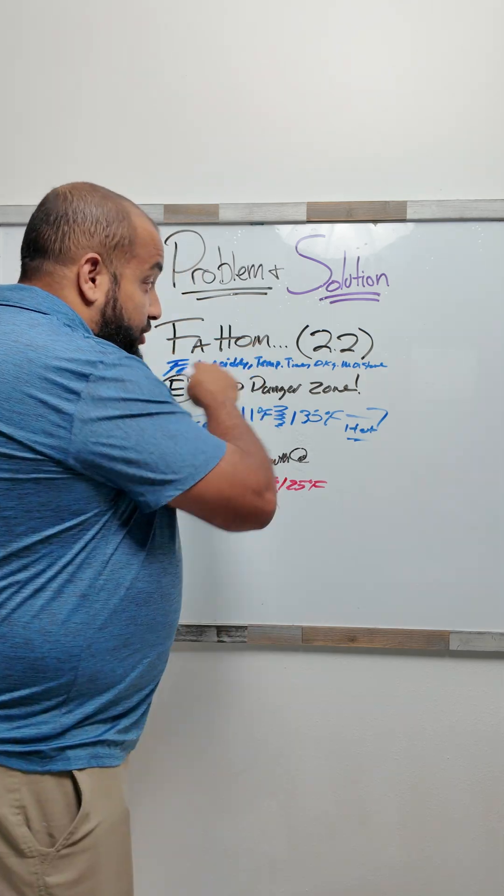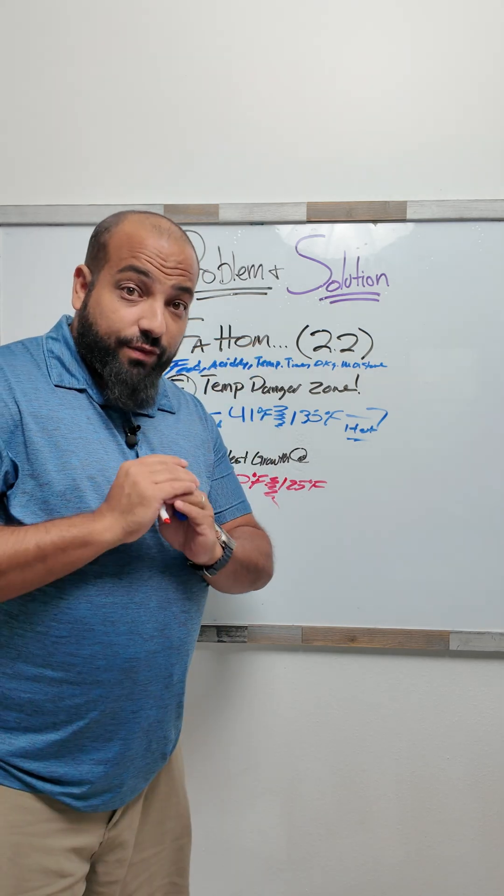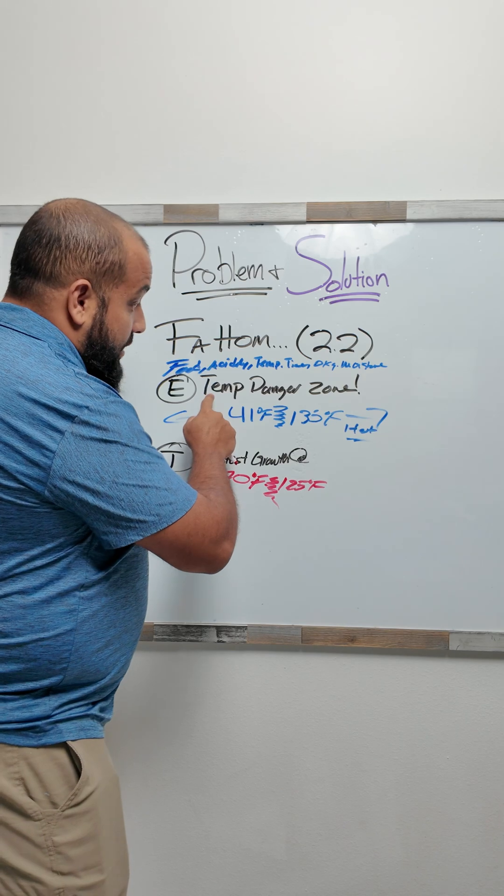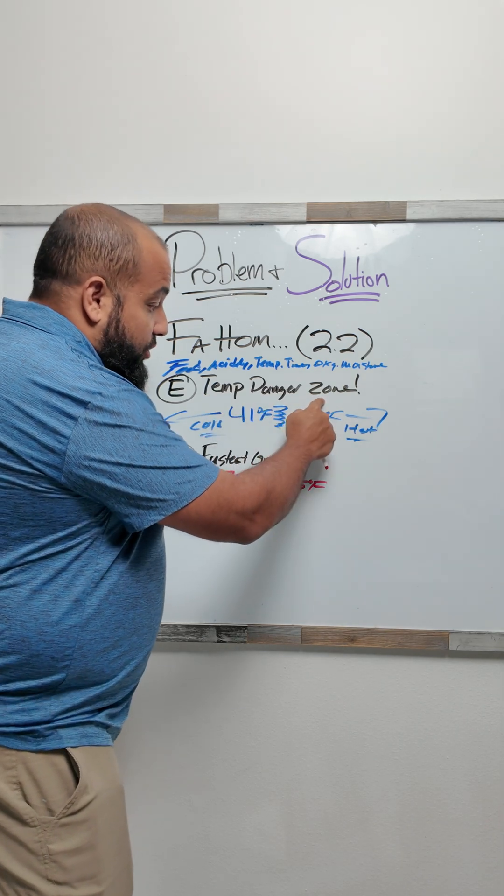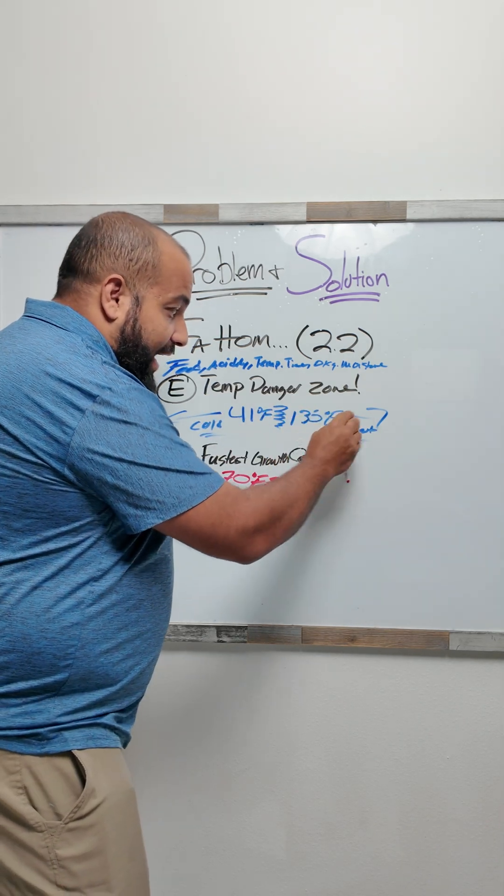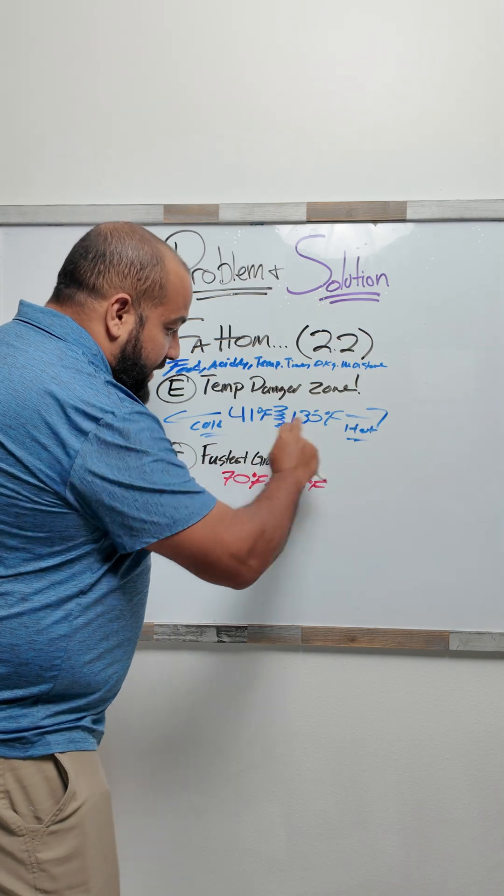A couple things. Understand Fat Tom. Understand the abbreviations. Second thing, temperature danger zone: 41 to 135. We keep hot food hot, cold food cold, nothing ever in between.